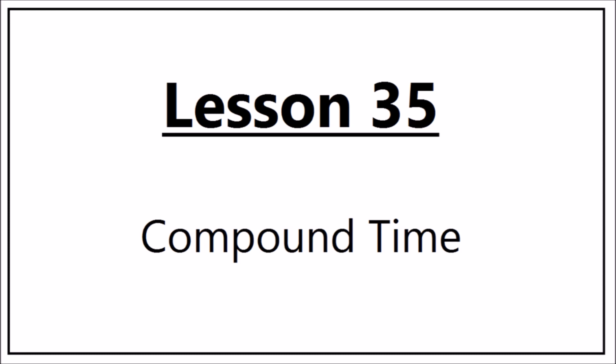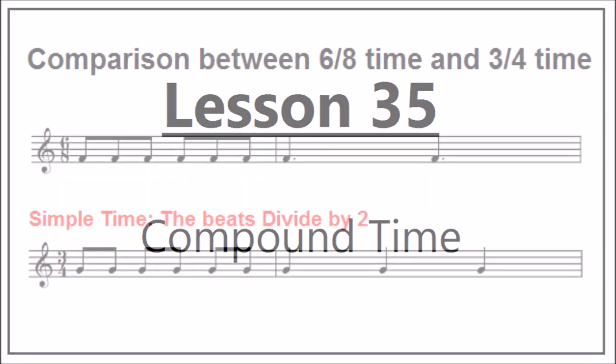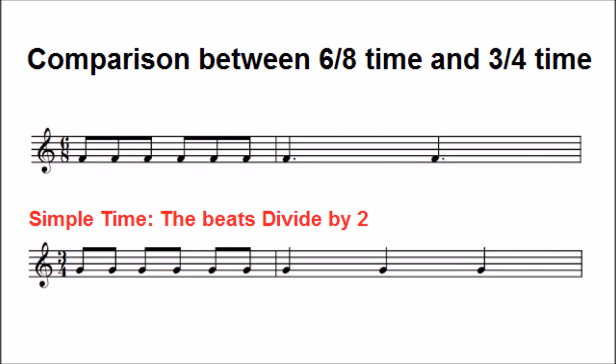Up until this point, the only time signatures you came across were in simple time. This means that the beats can be divided into two. In other words, a crotchet can be divided into two quavers, a minim can be divided into two crotchets, etc.